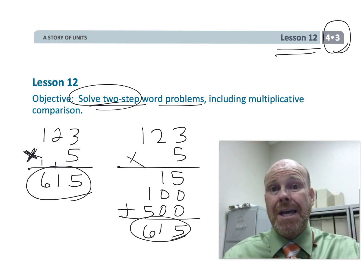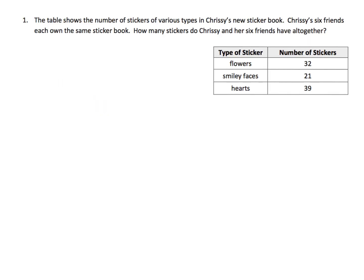The table shows the number of stickers of various types in Chrissy's sticker book. Chrissy's six friends each own the same sticker book. How many stickers do Chrissy and her six friends have altogether? I'm going to draw a tape diagram showing what is in Chrissy's sticker book: she's got 32 flowers, 21 smiley faces, and 39 hearts.